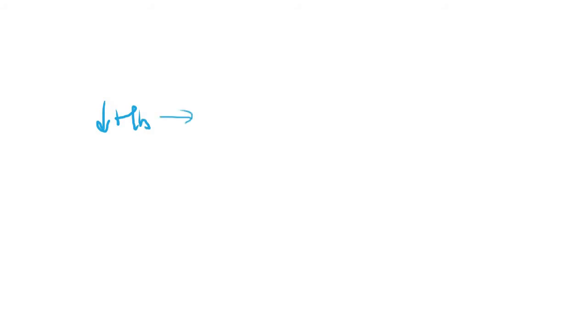In case of microcytic anemias, there is a deficient or decreased production of hemoglobin. As a result of decreased hemoglobin production, the RBCs have to undergo an extra division, which makes them small. Their MCV is less than 80 micrometer cube, and that's why these are called microcytes and the anemia is called microcytic hypochromic anemia.